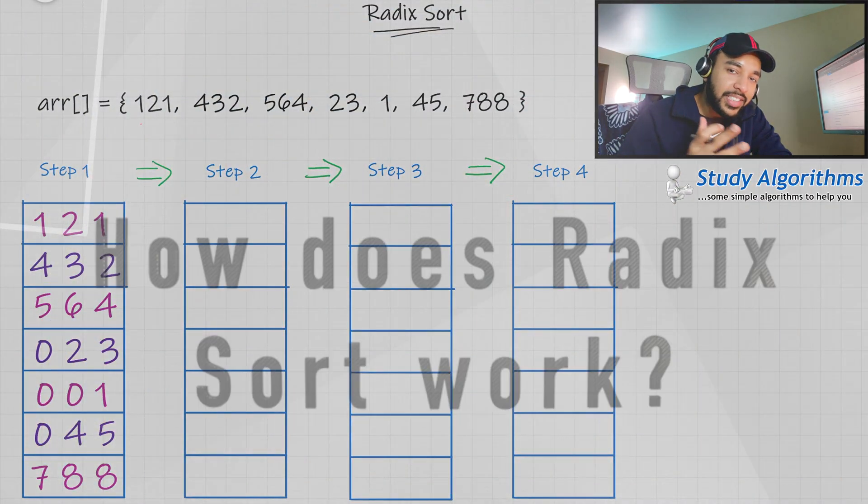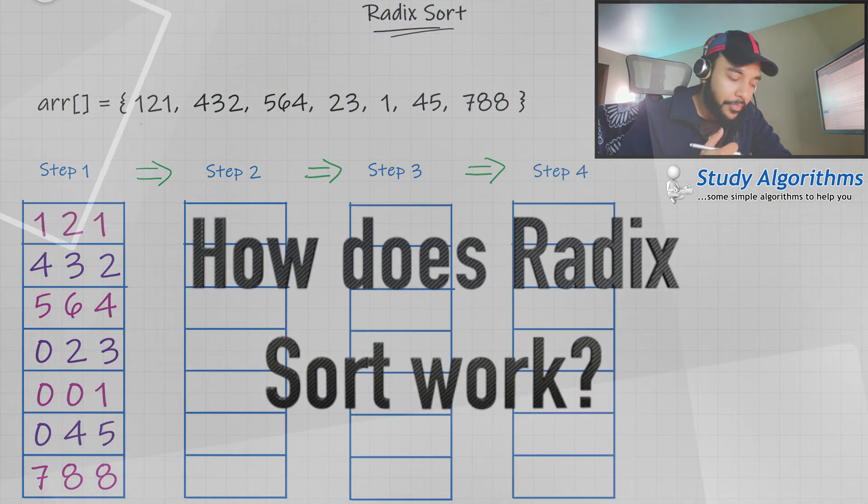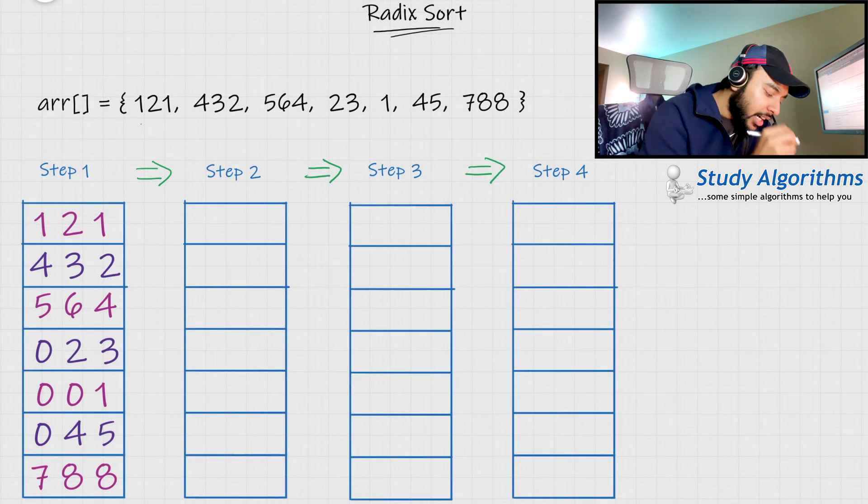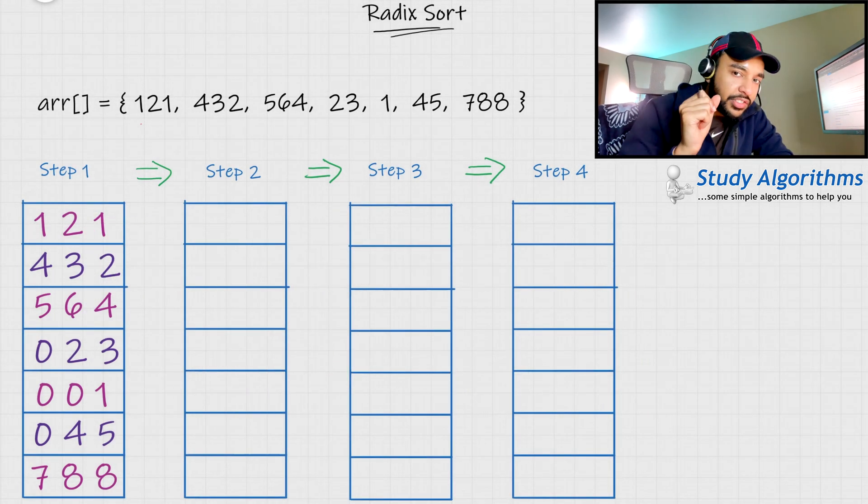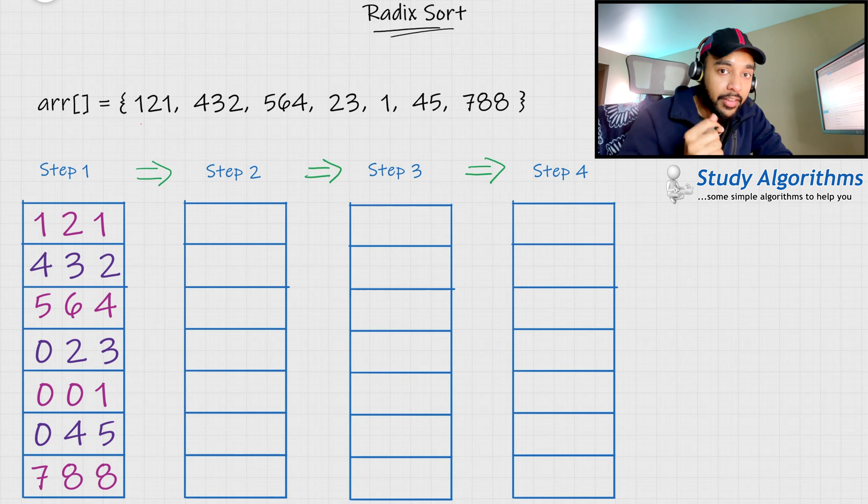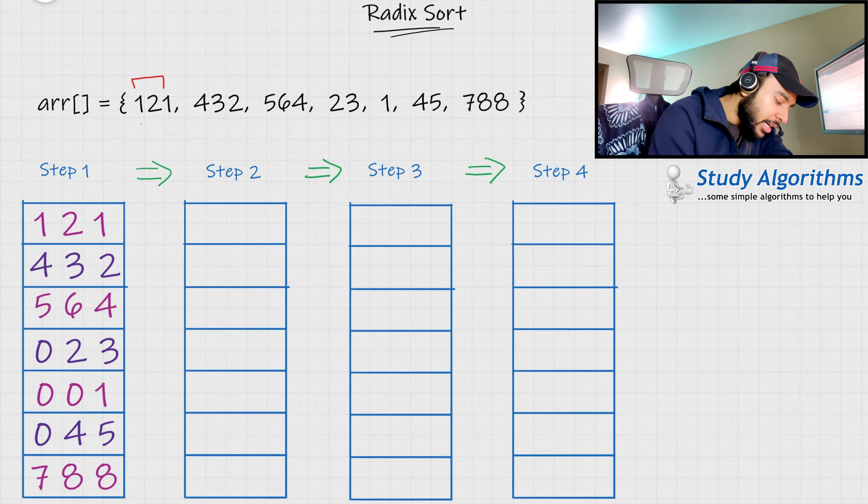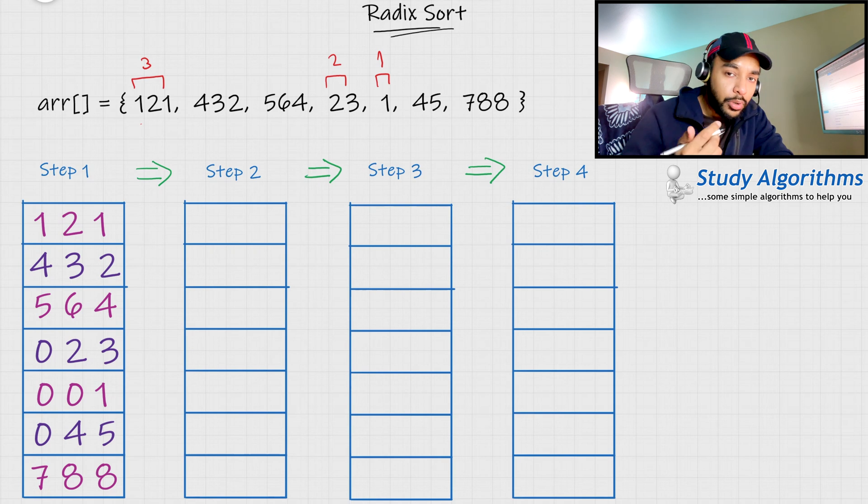Let us try to sort this array using the Radix sort algorithm. If you remember, I told you that in Radix sort, all of the elements should have the same number of digits. But if you see this array, you can see that some elements have three digits, some elements have two digits, and some elements have only one digit. So, can you not apply the Radix sort algorithm on this? Well, you can.